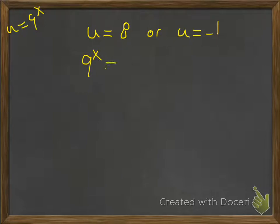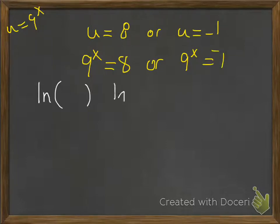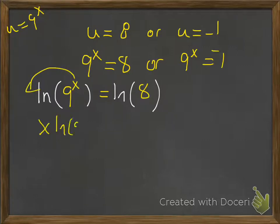And we're going to go ahead and replace the u's with 9^x's. And then to undo those exponents, we're going to go ahead and take the natural log of both sides. And we'll use the power rule to bring down the exponent of x. So that's what the power rule does.